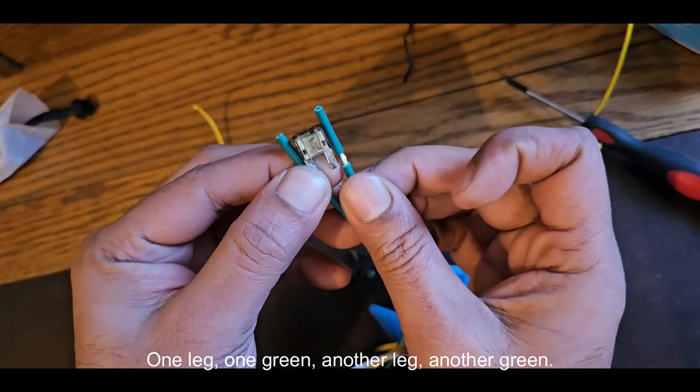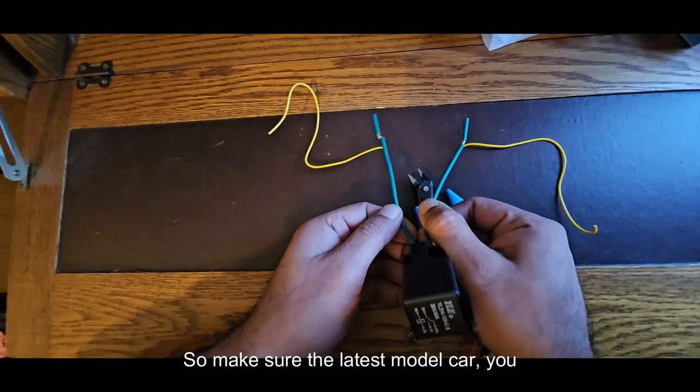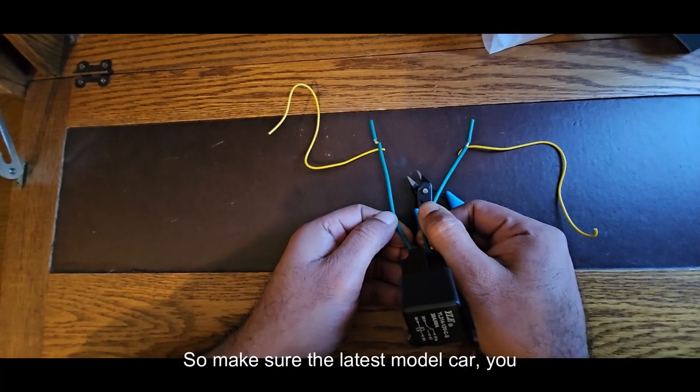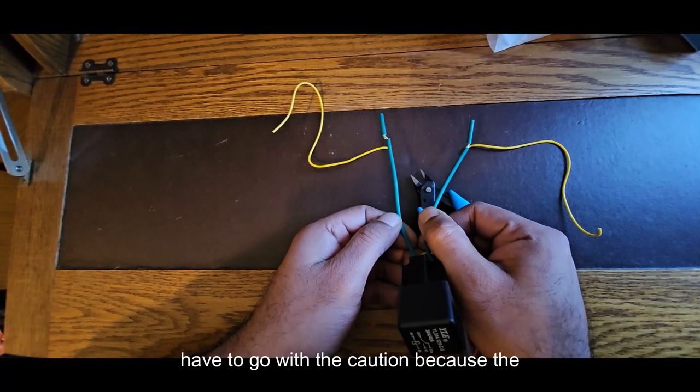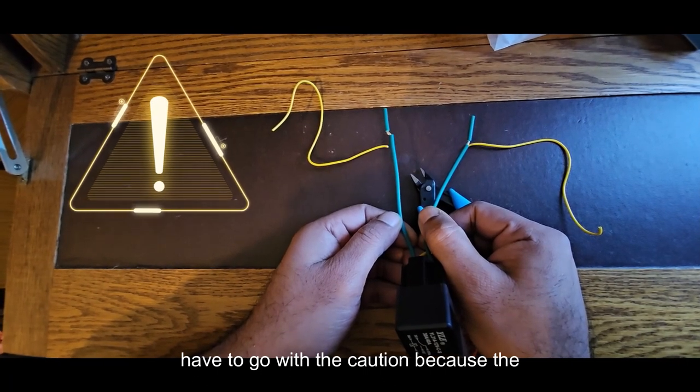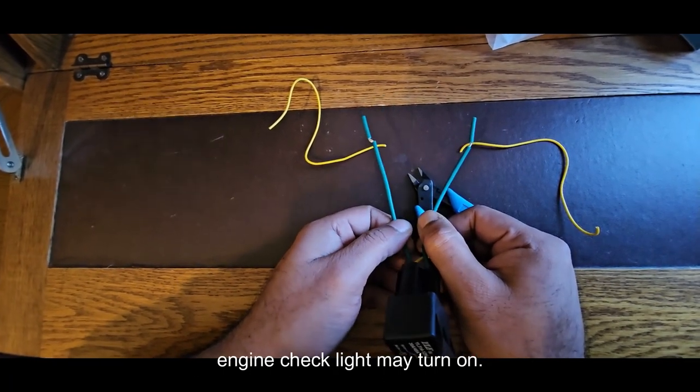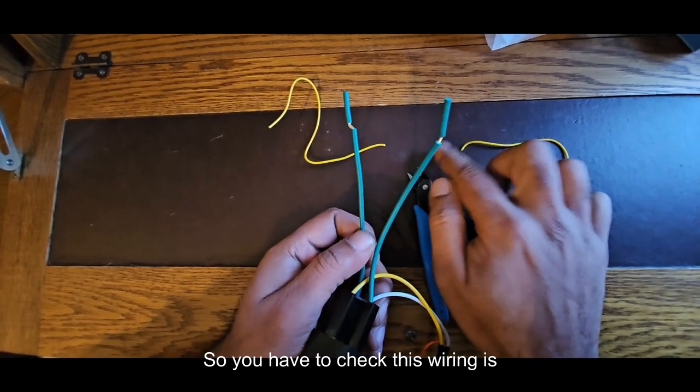One leg, one green. Another leg, another green. So make sure with the latest model car, you have to go with caution because the engine check light may turn on. So you have to check, this wiring is very important.